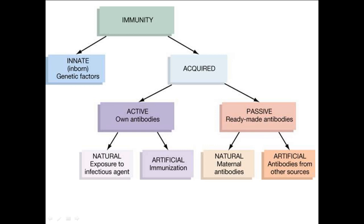Artificial passive immunity is where you are given a jab or a vaccination in the form of an injection, and that injection contains simply the antibodies. The major problem with artificial passive immunity is that, like anything within the body, it eventually gets recycled, so the antibodies given to you in the injection will at some point be broken down and therefore it won't be long lasting.